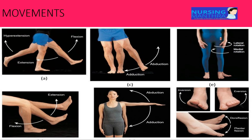Next we can see the movements of the body. First movement is abduction - movement away from the body. Adduction means movement towards the body. Flexion means bending of a limb towards the body. Extension means extending a limb away from the body. Rotation means movement around a central point. Other movements include inversion, eversion, dorsiflexion, and plantar flexion.